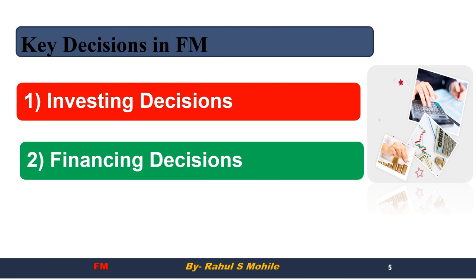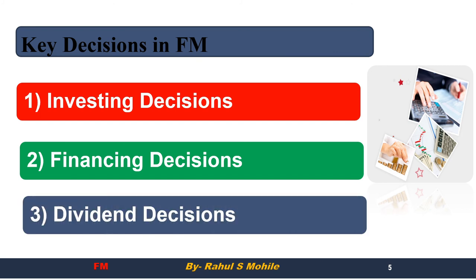Under financing decisions, whatever funds we are investing — the question is from where will the finance be arranged? From where will we bring the money? Will we issue equity? Will we issue preference shares? Will we issue debentures? Will we take a loan? For all these points, we need to study a concept called capital structure — for example, 60% equity and 40% borrowed funds. This combination is nothing but capital structure.